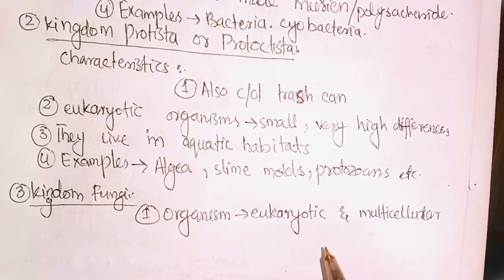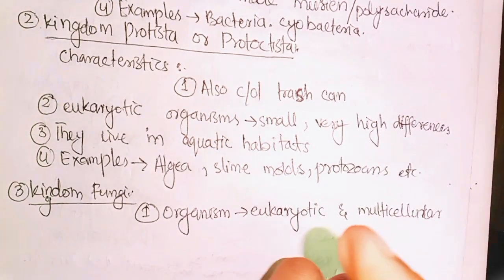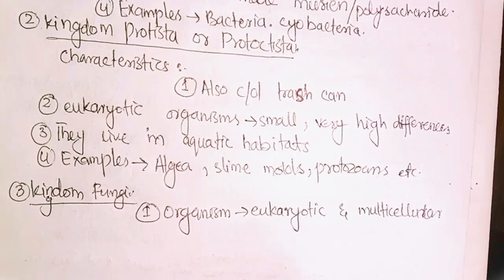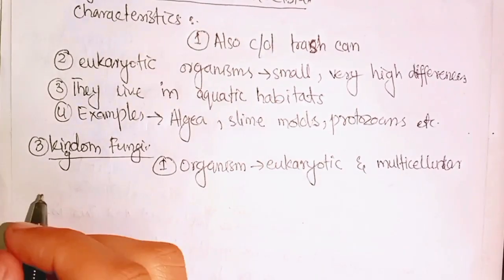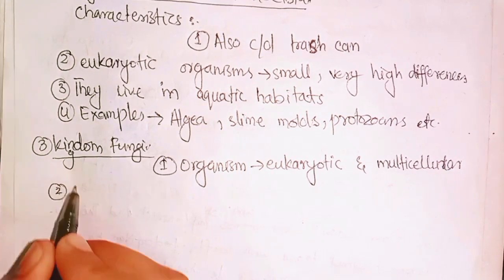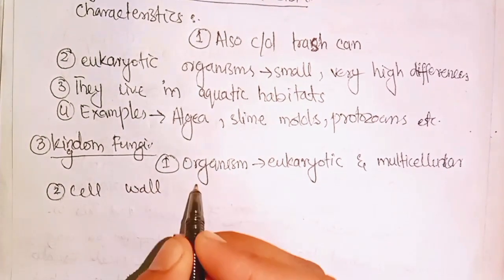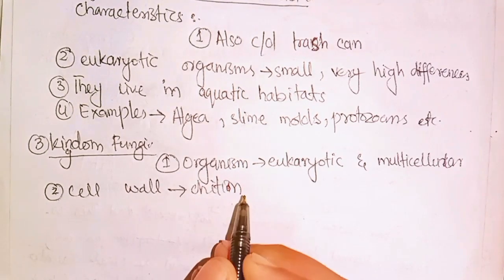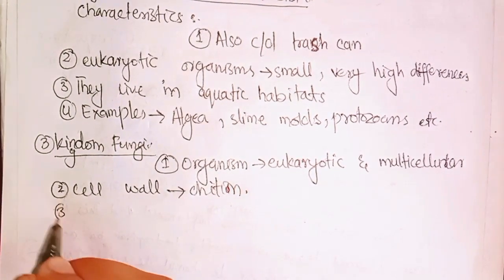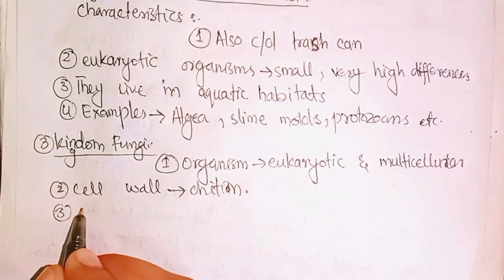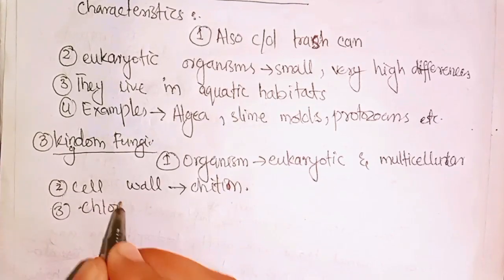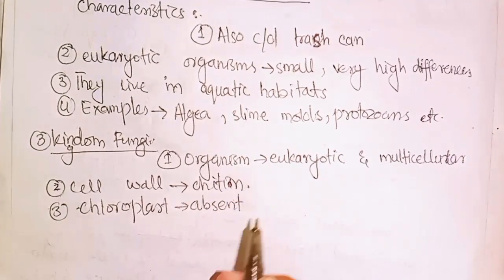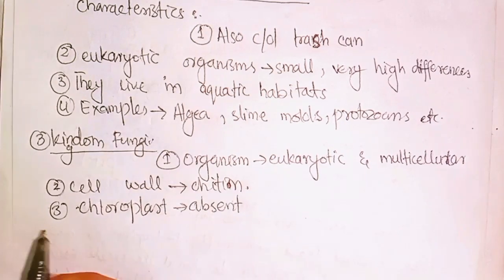Unicellular organisms have only one cell. Multicellular organisms have more than one cell. Fungi do not have chloroplast — chloroplast is absent in Fungi. This is an important characteristic of Kingdom Fungi.